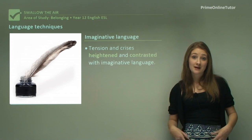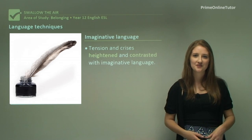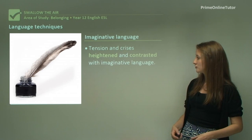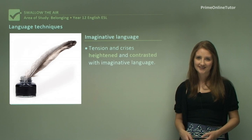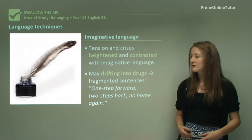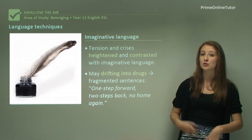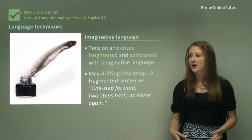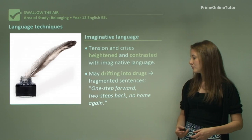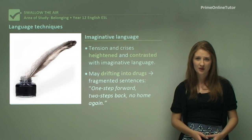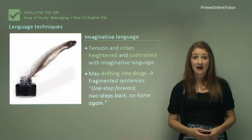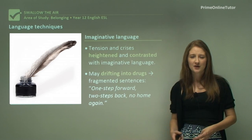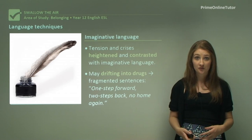The concept of imaginative language is also used significantly in this work. Tension and crises are heightened and contrasted with imaginative language. For example, when May drifts into the drug scene and a violent, addictive gang world, we see the fragmented sentence: 'One step forward, two steps back, no home again.' That really fragmented line is suggestive of May's personal struggle — you're seeing that interaction between language and content.